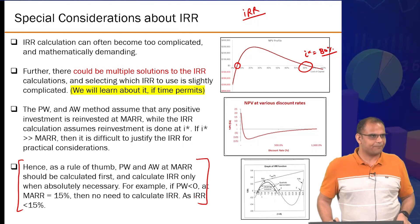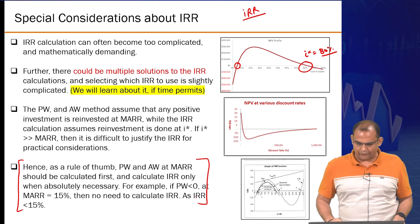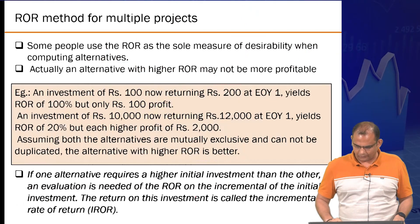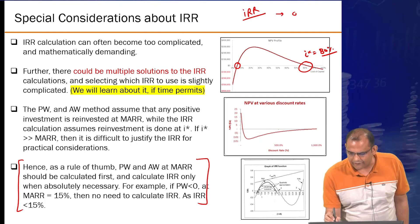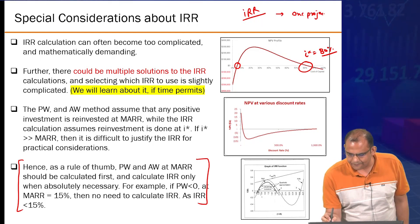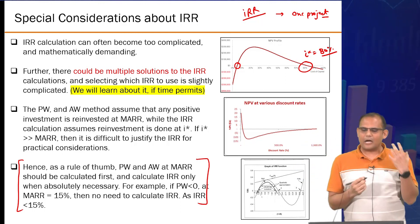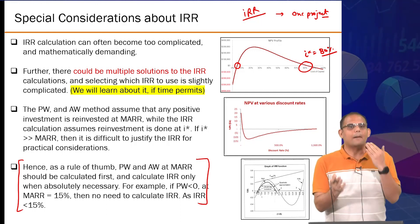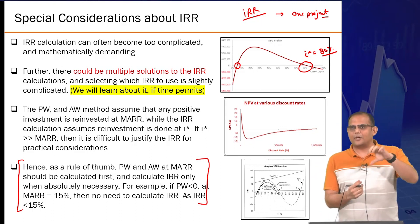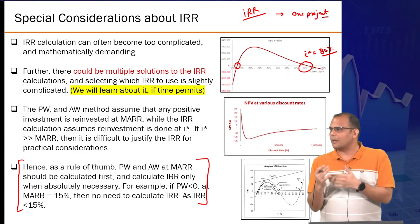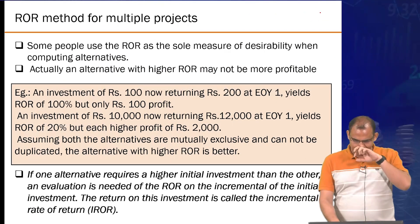So far we have seen IRR only for one project — IRR for one project versus IRR for a second project versus IRR for a third project. But how do you use the IRR method to compare alternatives? In present worth analysis, comparing a single project doesn't make sense — you ultimately need to compare multiple projects. So how do you compare multiple projects using the IRR method is what we're going to address.